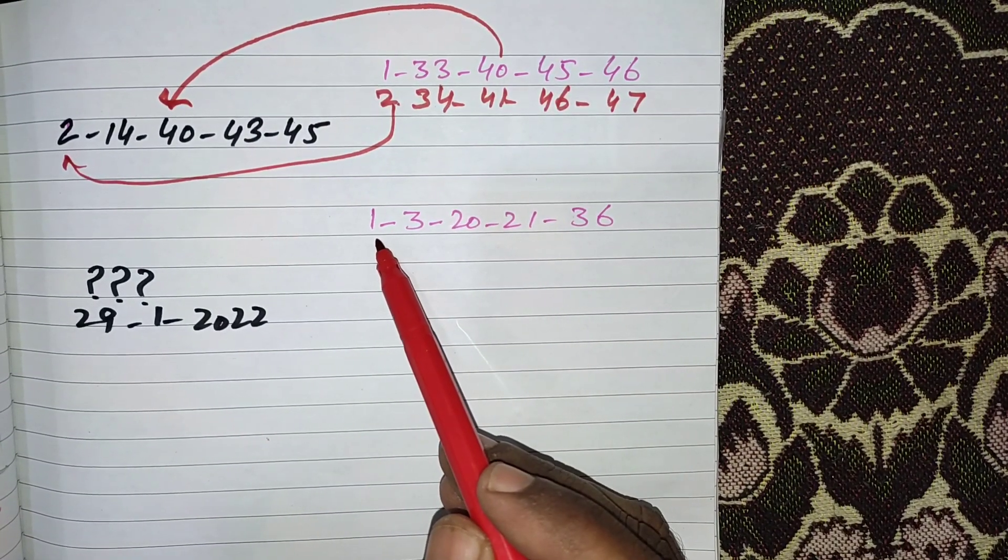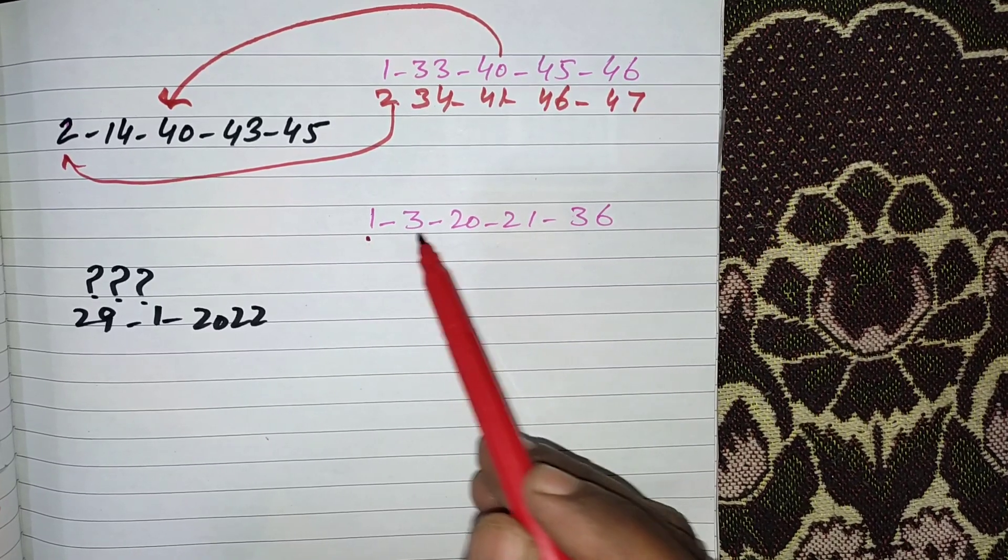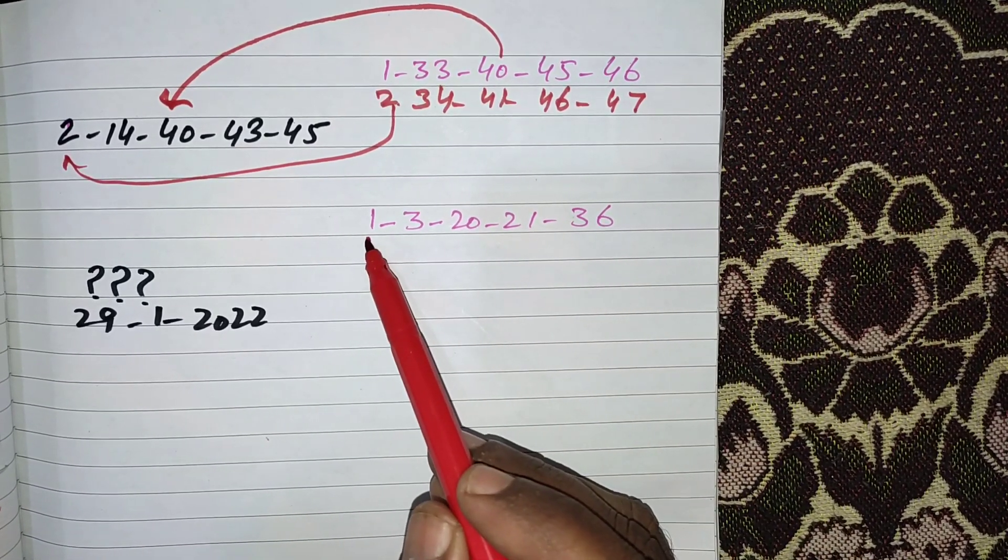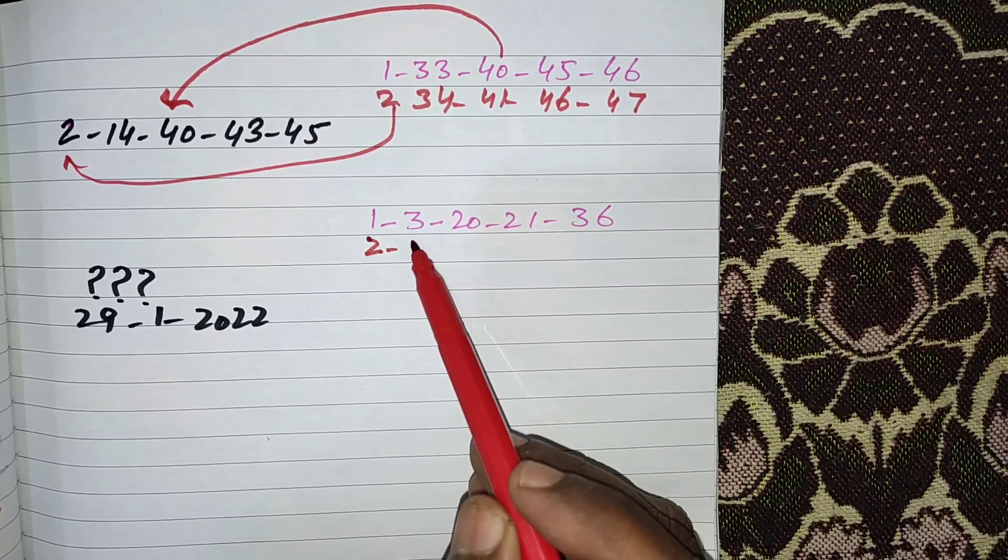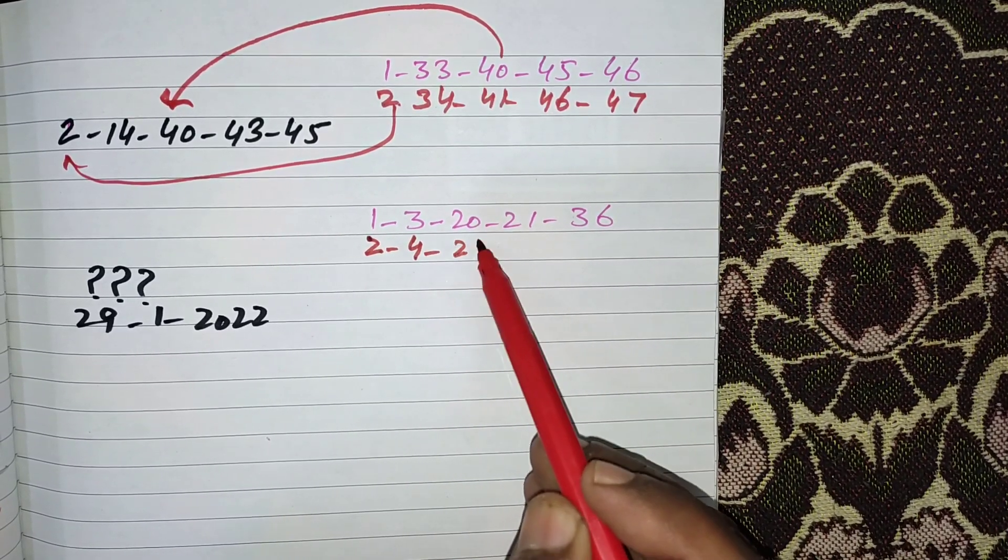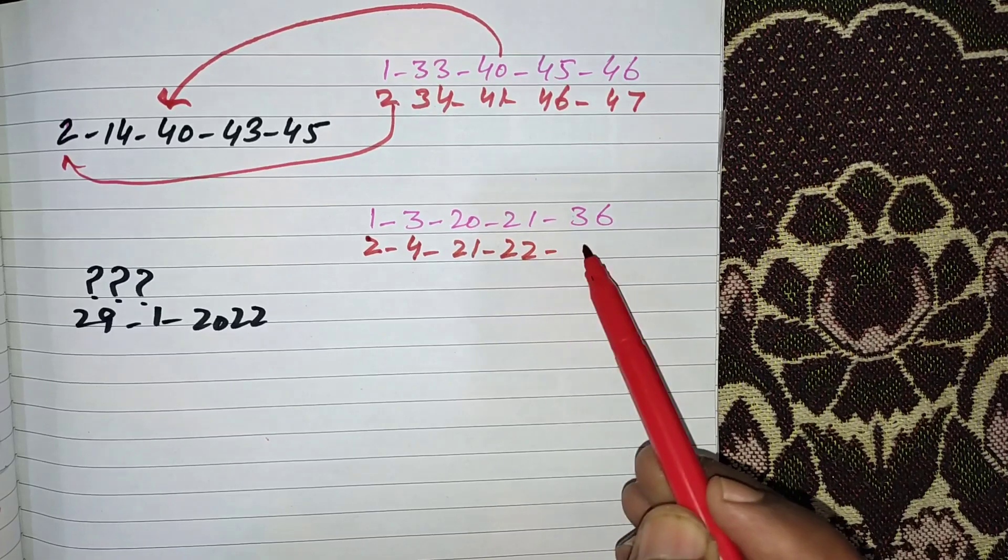Now it is our previous result: 1, 3, 20, 21, and 36. Increase 1 time: 2, 4, 21, 22, and 37.